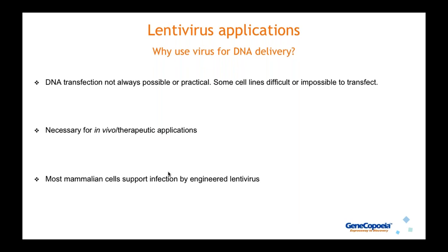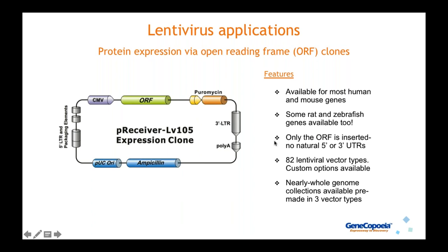Why use virus for DNA delivery? Many people think first about DNA transfection, which is great, but it's not always possible or practical — some cell lines are difficult or impossible to transfect. Viral DNA delivery is generally necessary for in vivo or therapeutic applications. Most mammalian cells support infection by engineered lentivirus. One key application is protein expression via ORF clones. GeneCopia provides genome-wide collections of human and mouse ORF clones — also some rat and zebrafish — with only the ORF inserted, using strong heterologous promoters like CMV.